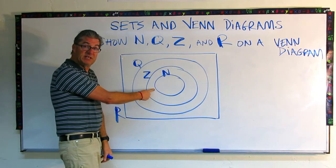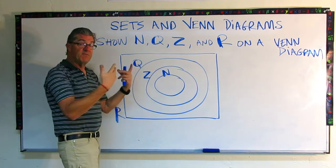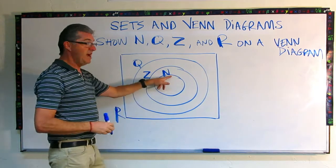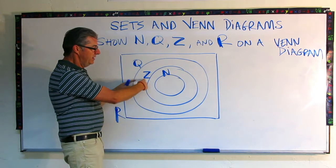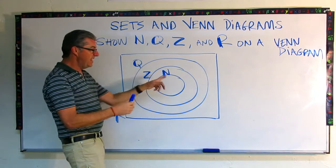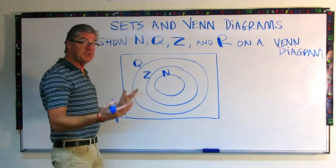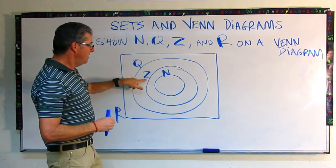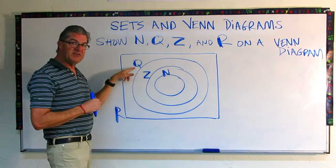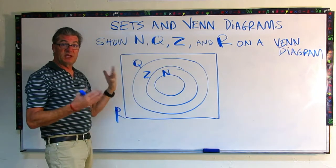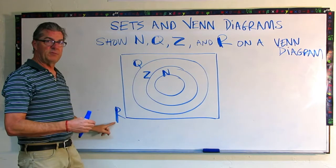So to review, the natural numbers are completely contained within the integers. The integers have more, but the natural numbers, every natural number is indeed an integer. Now the integers contain the natural numbers, but also the negative numbers. So it's a wider defined set, has more things in it. And the integers are completely contained within the rational numbers. Then we move out, rational numbers, numbers that can be expressed as fractions, those are completely contained within the real numbers.